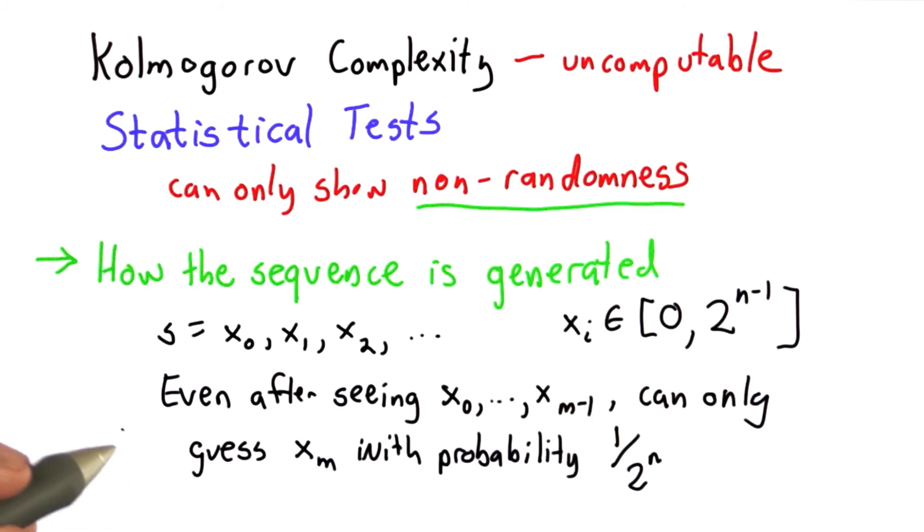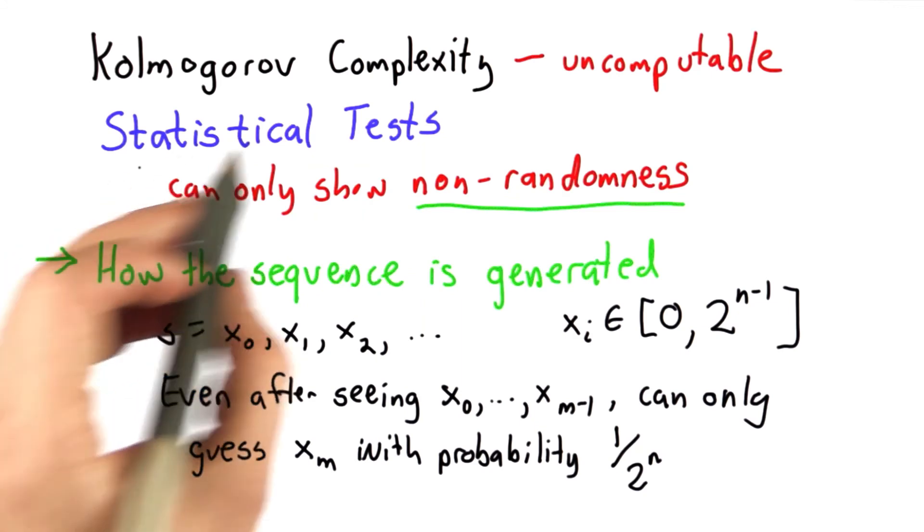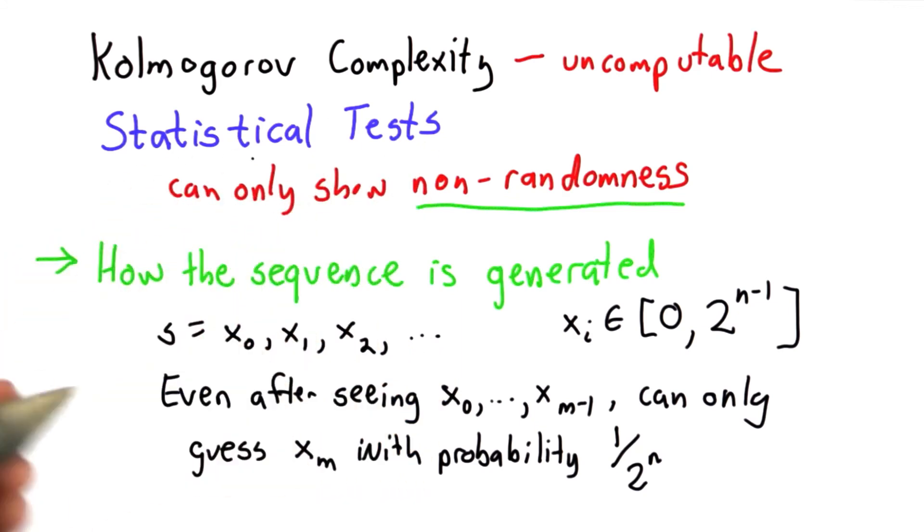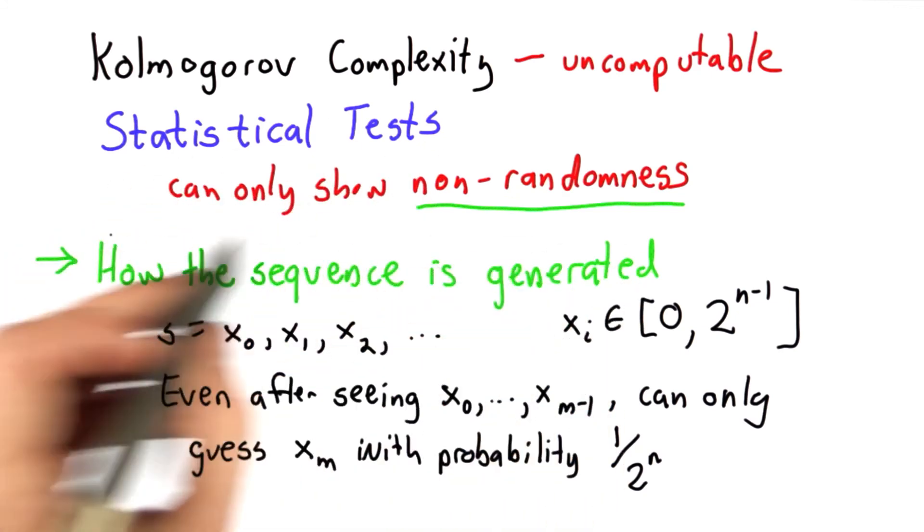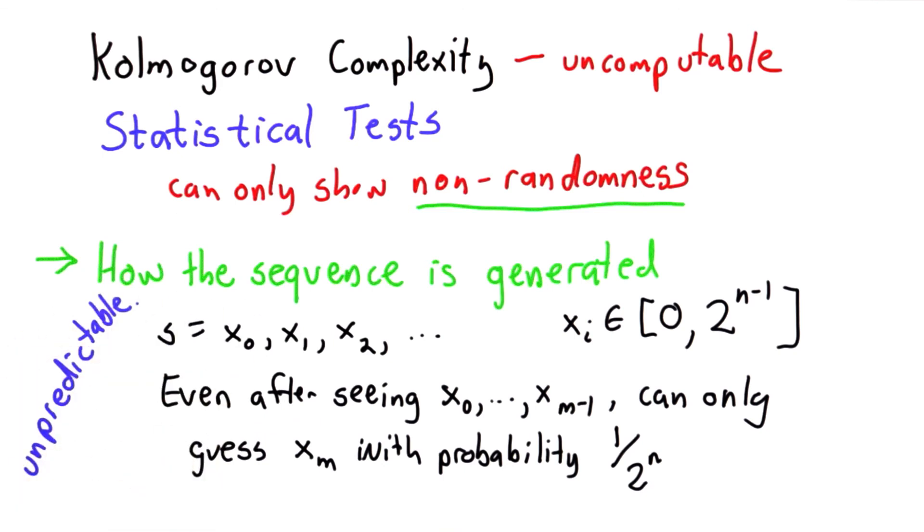So that's the property we want. If we're going to get that property, we can't do it by using Kolmogorov complexity because that's uncomputable. We can't do it with statistical tests because they can only show non-randomness. The way we're going to try to achieve that is by generating the sequence in a way that produces values that are unpredictable to the attacker.